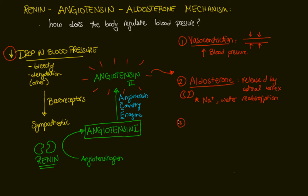The third effect that angiotensin 2 elicits involves another hormone: anti-diuretic hormone, ADH, secreted by the posterior pituitary — a very important endocrine gland. ADH is also going to act on the kidneys in order to retain water. Both aldosterone and ADH, by increasing water and sodium reabsorption, are going to increase blood pressure.